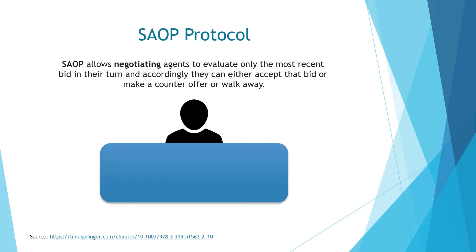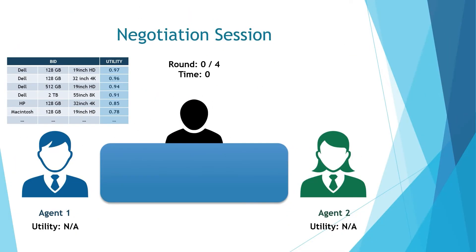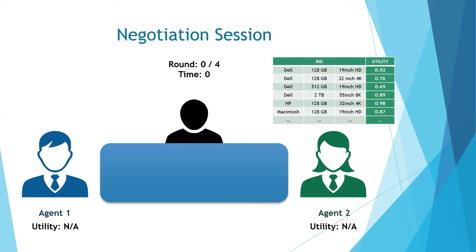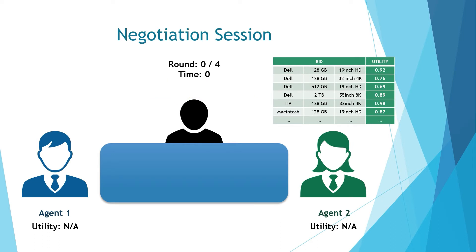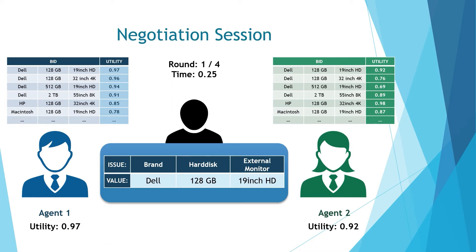In ANAC 2021, the SAO protocol is used, which allows the agent to evaluate only the most recent bid in their turn. Now let's simulate a negotiation session. In a session, two different profiles are assigned to two different agents. From agent one's perspective, the preference of agent two is not visible, and agent two does not know the preference of agent one. The negotiation session takes four rounds. In round one, agent one selects a bid and offers it — the utility of the offered bid is 0.97 for agent one and 0.92 for agent two.